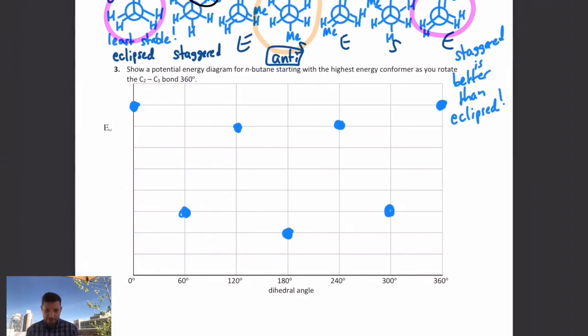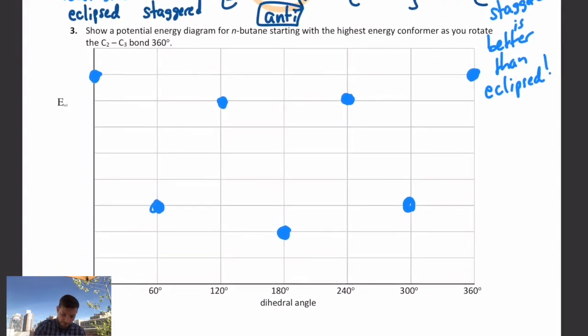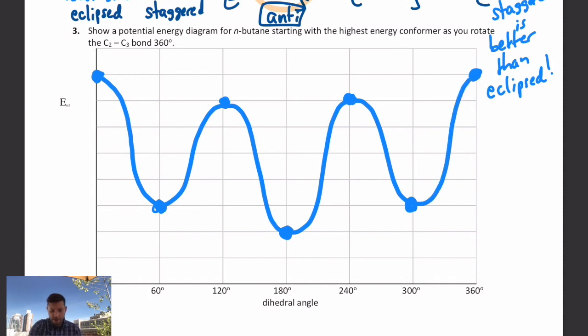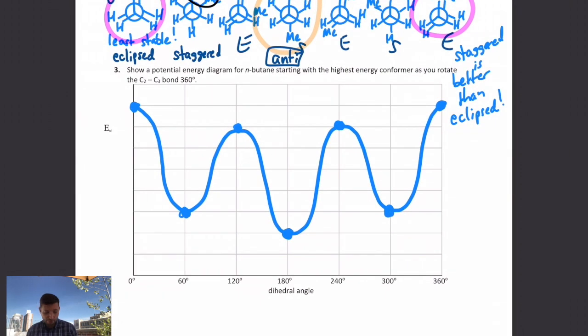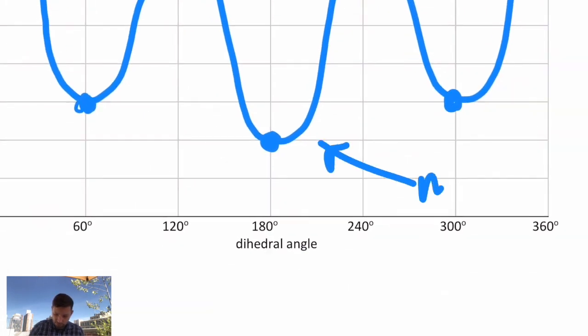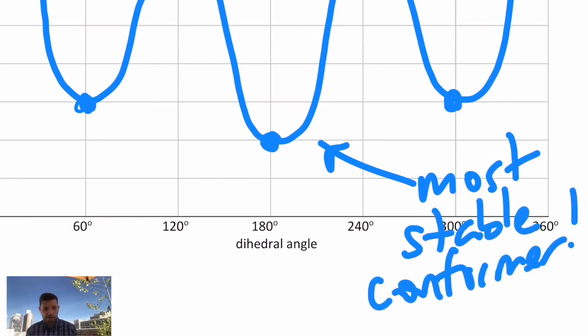Now, those are only the minima and maxima. There are other conformers that are in between, but we can approximate what those energies are by just drawing a curve of the relative energies that we see, and that would encompass every possible conformer to a rough approximation of where our high points and low points are for all the staggereds and all the eclipsed conformers, and this would just continue to rotate. What really matters is our lowest energy point. This is the most stable conformer, and that's where that molecule normally will exist.